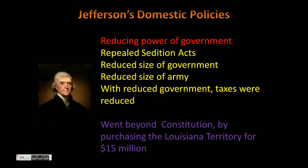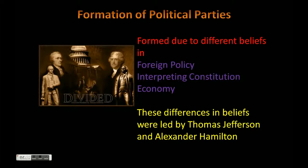Thomas Jefferson was elected and came in and really started undoing some of the things done under the Adams administration. The Adams administration had given a lot of power to government, and Jefferson wanted to go the opposite way — he believed in smaller government. So he repealed the Sedition Acts, reduced the size of the government and the army to just over 3,000, and with reducing the government we didn't need as much money to run it, so taxes were reduced. However, Jefferson went beyond the Constitution when he purchased the Louisiana Territory for 15 million dollars because he felt it was in the best interest of America — which goes against his own beliefs.